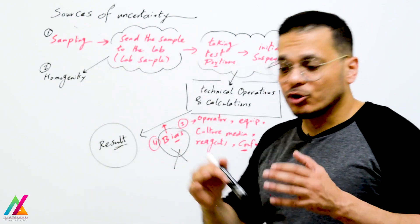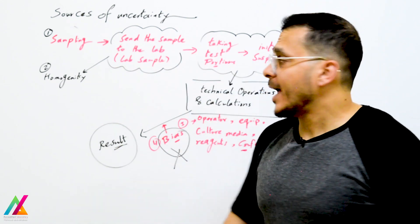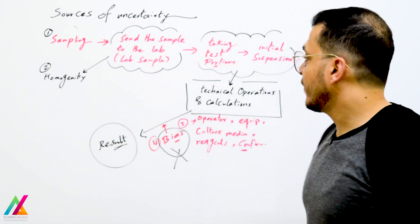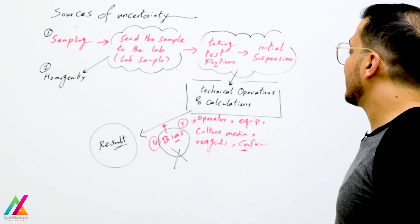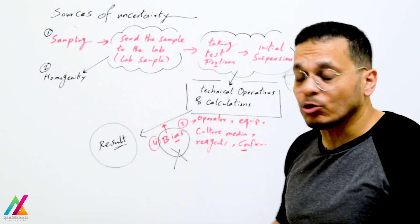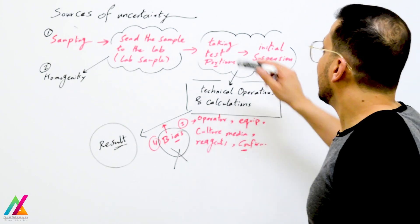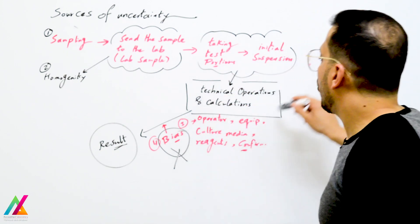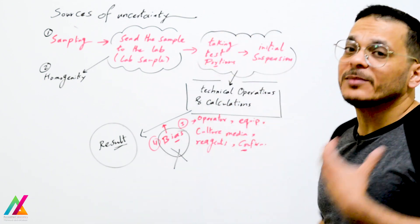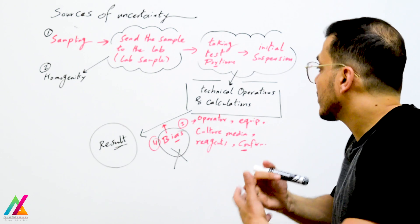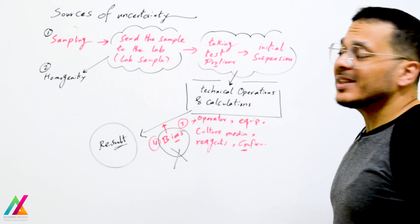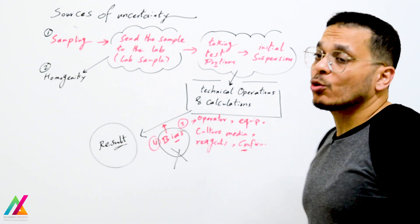The lab sample should be homogenized well, and homogenization will affect the result, so homogeneity can be a source of uncertainty. Then taking test portions is also a source of uncertainty, followed by initial suspension, technical operations, and calculations — all of these involve many sources of uncertainty from the operator, equipment, culture media, reagents, and confirmation if required.